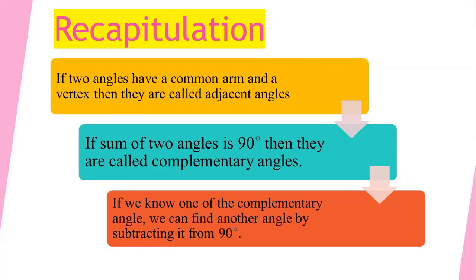Recapitulation: we have studied that if two angles have a common arm and a common vertex, then they are called adjacent angles. On the other hand, if the sum of two angles is 90 degrees, they are called complementary angles. To find the complementary angle, if we know one of the angles, we subtract it from 90 degrees to find the other.